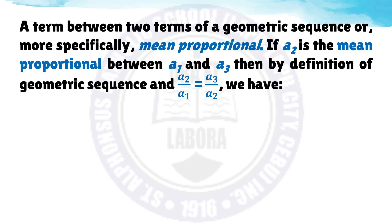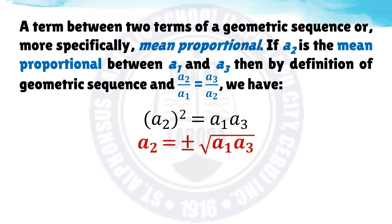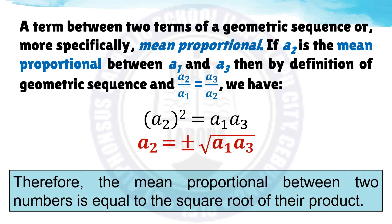A term between two terms of a geometric sequence is called the mean proportional. If a sub 2 is the mean proportional between a sub 1 and a sub 3, then by definition of geometric sequence, a sub 2 over a sub 1 equals a sub 3 over a sub 2. This gives us a sub 2 squared equals the product of a sub 1 and a sub 3, and therefore a sub 2 equals positive or negative the square root of the product of a sub 1 and a sub 3. The mean proportional between two numbers equals the square root of their product.